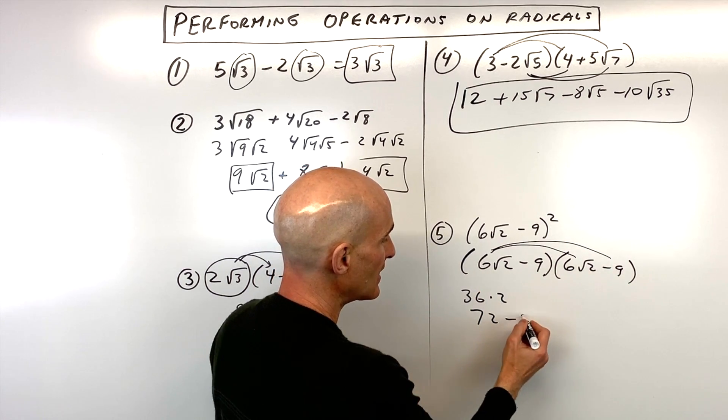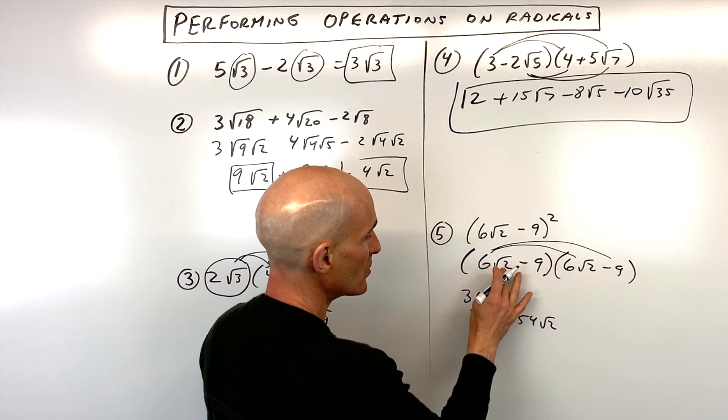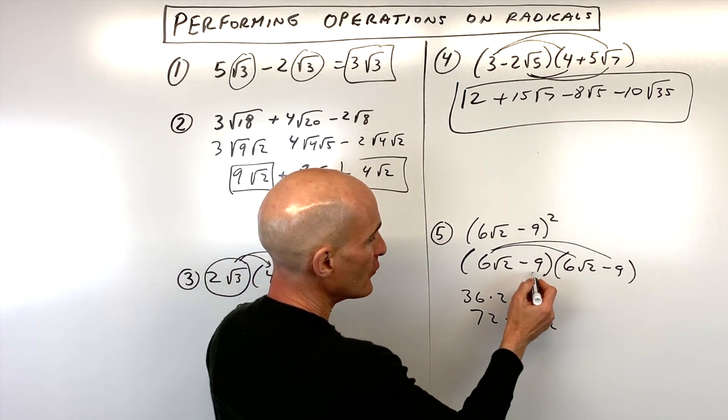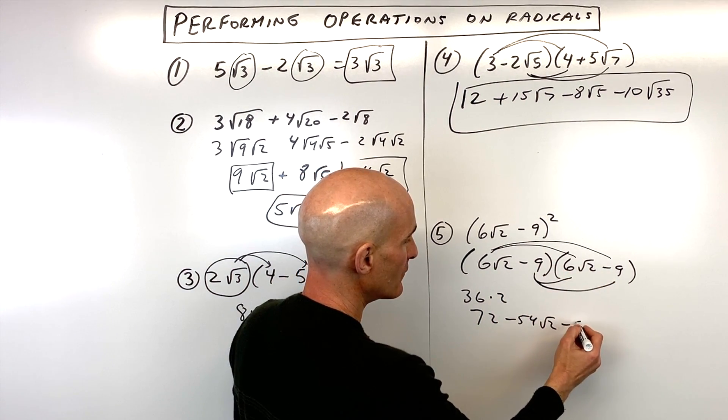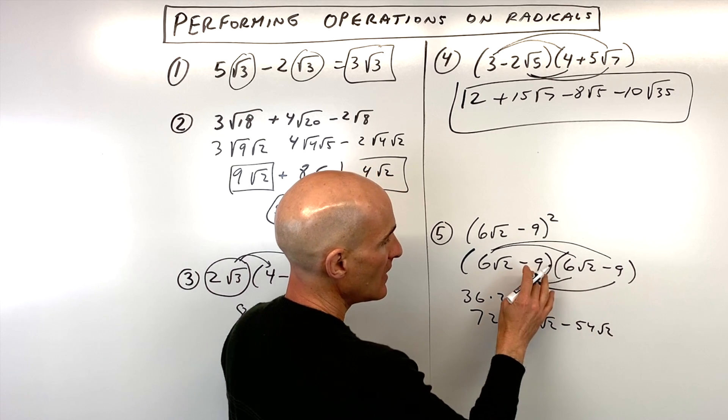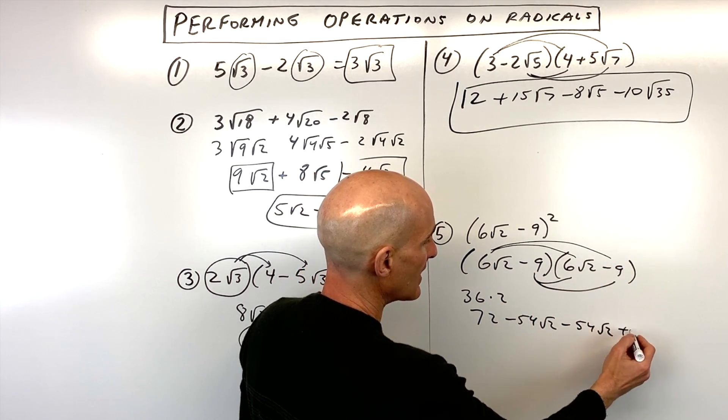Six times negative nine is negative 54. And the square root of two comes along. And then now if we take negative nine and distribute, negative nine times six is negative 54 square root of two. And negative nine times negative nine is positive 81.